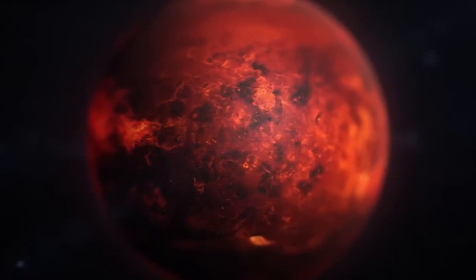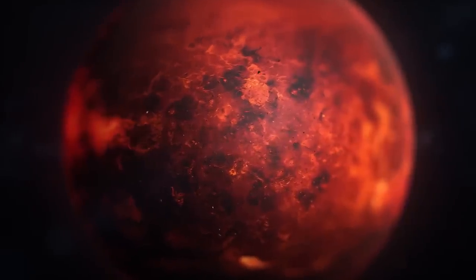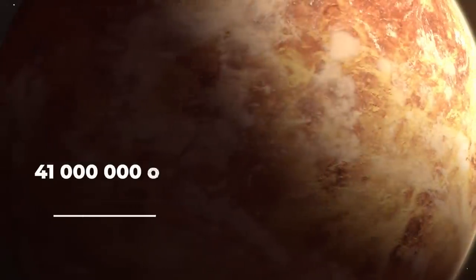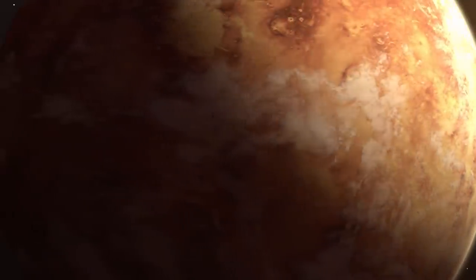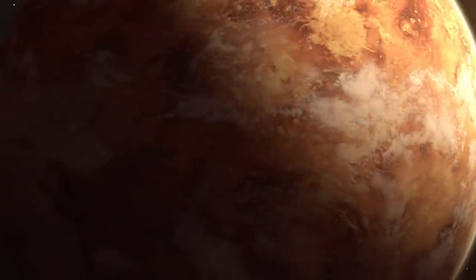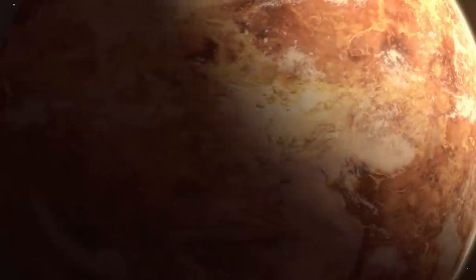Venus is the second planet of the solar system that one meets while moving away from the Sun. 41 million kilometers separate it from our planet Earth, that is to say, more than 25 million miles. Its size and geology make it the twin sister of our planet Earth.